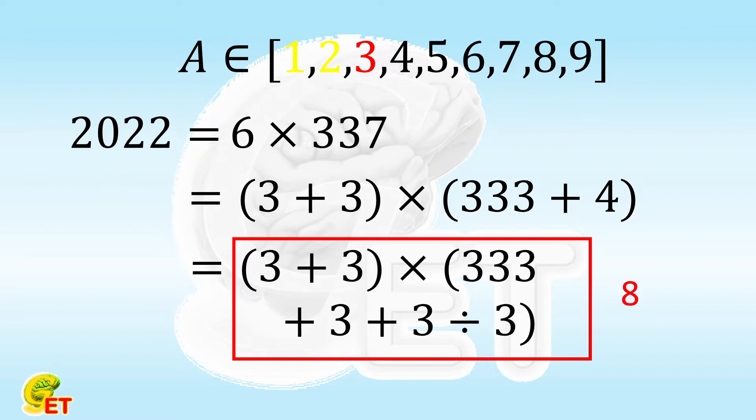If the factorial is allowed to use in this question, we can replace the 3 plus 3 part with a factorial of 3. In that case, only 7 times of digit 3 is enough to fulfill the task. However, factorial is not allowed here, so using 8 times of 3 is already a good solution.